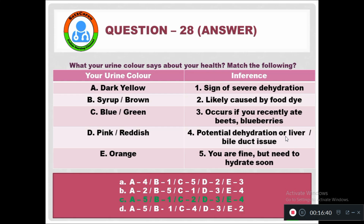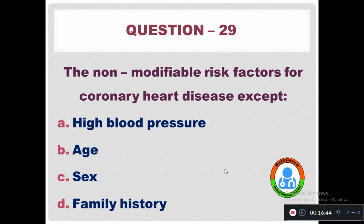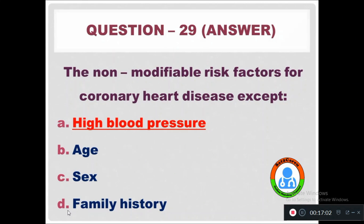Question 29: The non-modifiable risk factors for coronary heart disease — except — Option A: High blood pressure. Option B: Age. Option C: Sex. Option D: Family history. High blood pressure is the modifiable risk factor, making it the correct answer for 'except'.